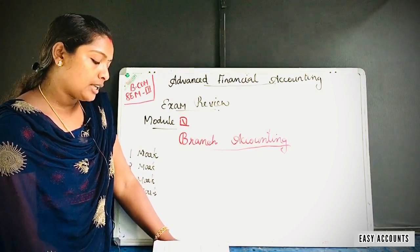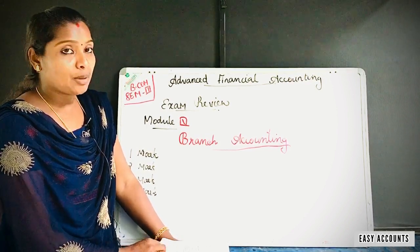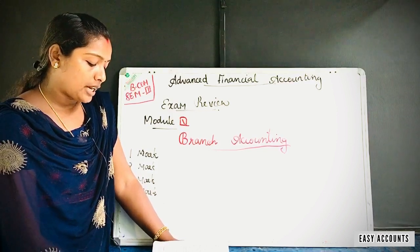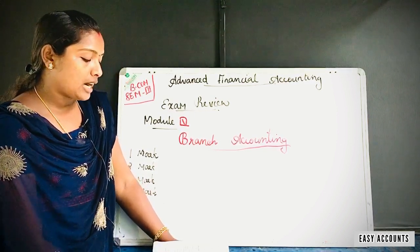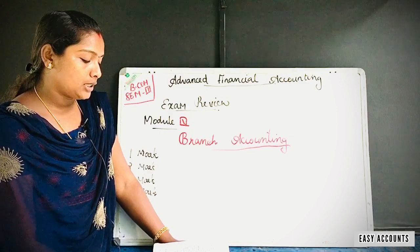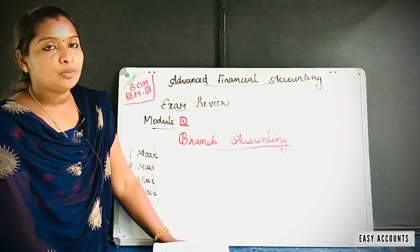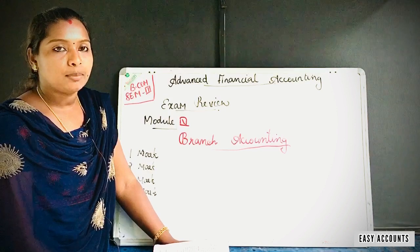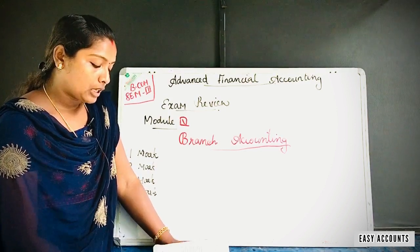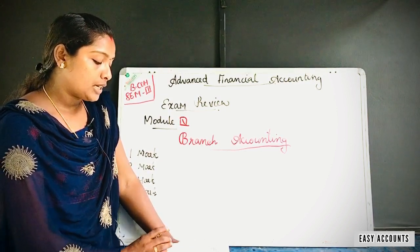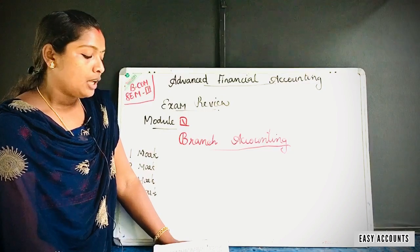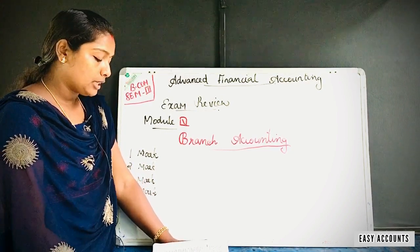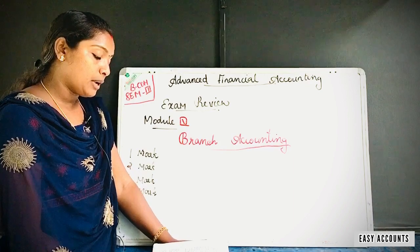We have to understand what is goods in transit and cash in transit, and we thought about the journal entry for those. Let's discuss that in four markets. As you can discuss the goods-in-transit or cash-in-transit, we will keep that journal entry.